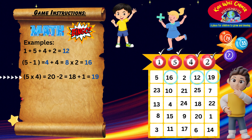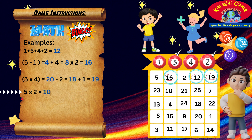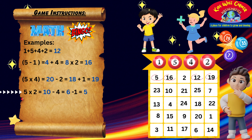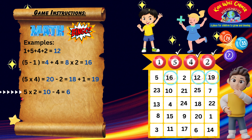Let's try another. Five times two is ten. Next, from the ten we minus four, so ten minus four is six. Then we subtract one. We get five. We circle five.